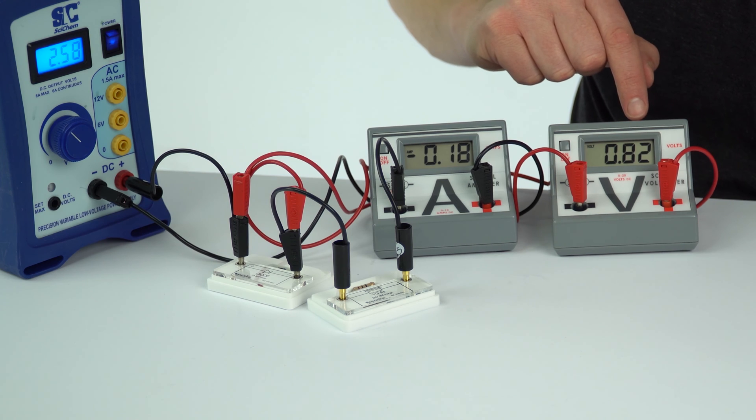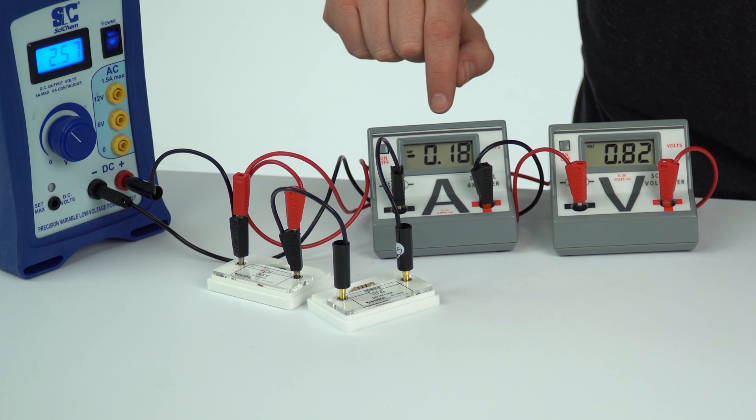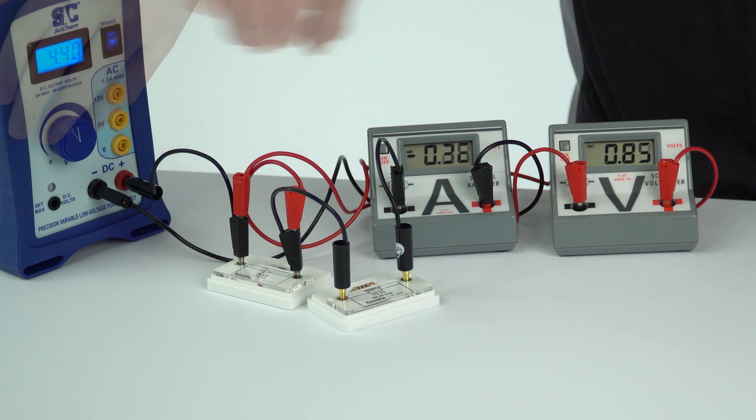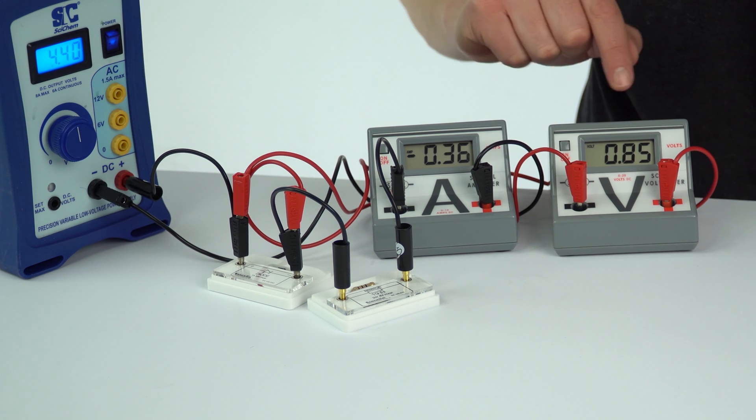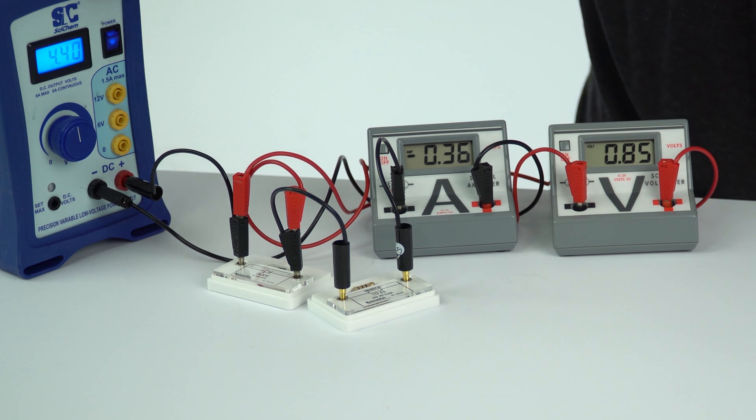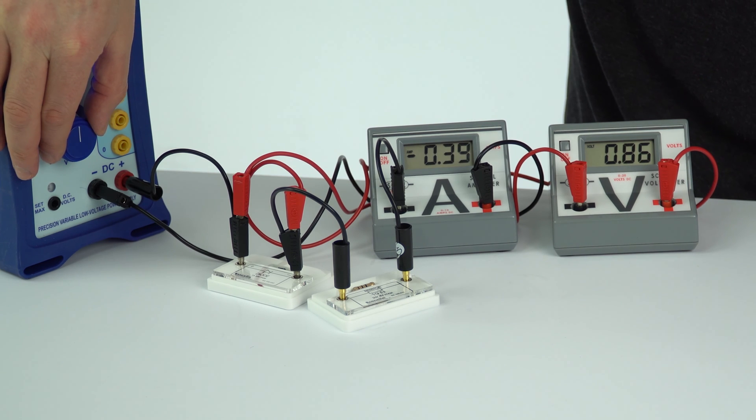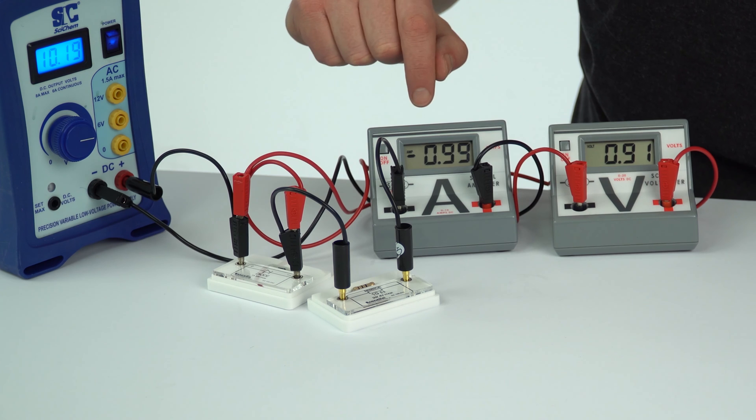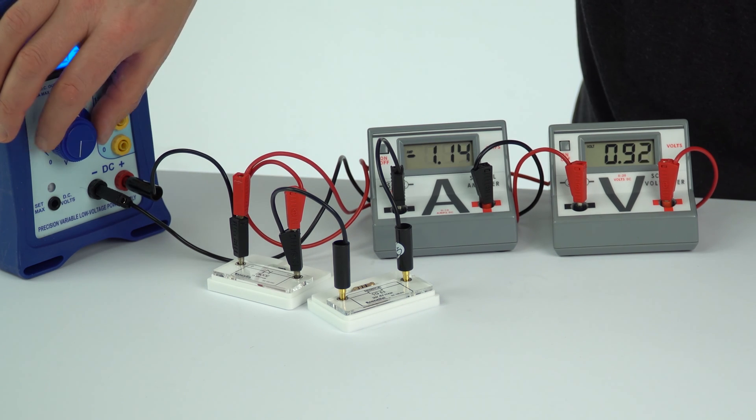We've got 0.85 and 0.35 or 36 or 37. Again, you can pause the video and take a good value for that. At 0.91 we've got 0.98 or 99, and it's pretty much maxed out now. 0.92 and that's about 1.15.